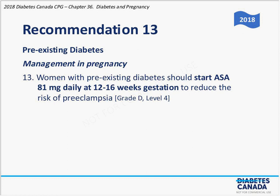This is something I haven't been doing in the past, but it looks like I'll be doing it now: women with preexisting diabetes — type 1 and type 2 — should start ASA 81 milligrams daily at 12 to 16 weeks gestation to reduce the risk of preeclampsia. I think that's new to me anyway, and I'd be interested to hear if other people have been doing that routinely.